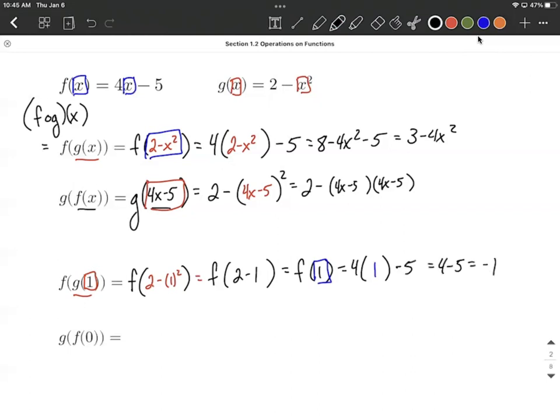All right, finally, we have g composed with f of 0. So g and its set of parentheses comes along. Our next thing we want to do is evaluate f of 0, so we're going to use f of x, the top left function, and we're going to plug in a 0 in for our x.